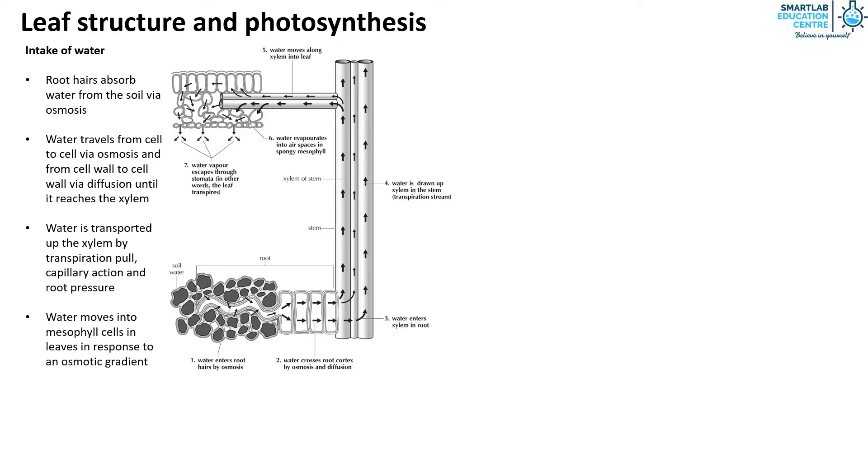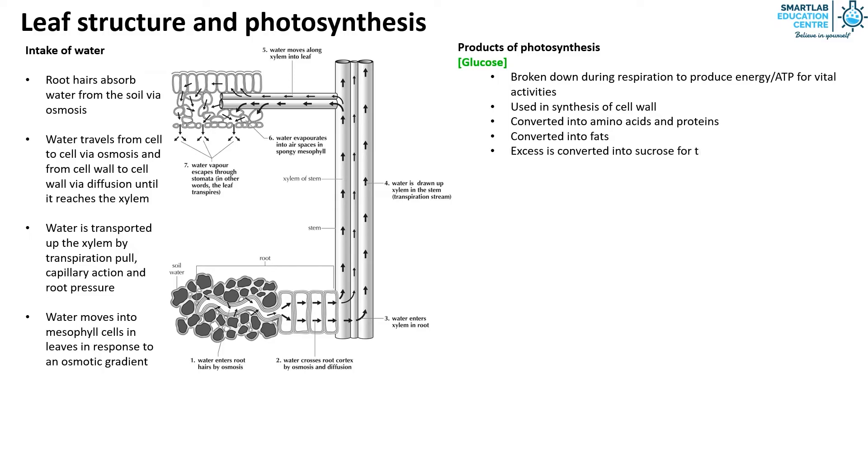We know that at the end of photosynthesis glucose and oxygen are produced but what happens to these products? For glucose, it is broken down during respiration to produce energy or ATP for vital activities. It can be used in the synthesis of cell wall, or converted into amino acids, proteins and even fats. Excess glucose is converted into sucrose for translocation or stored as starch in chloroplast, or stored as starch in the form of starch granules in the cytoplasm of storage organs like tubers.